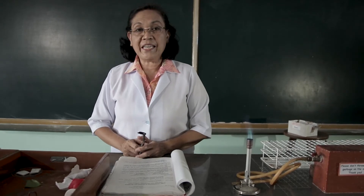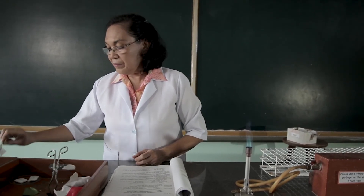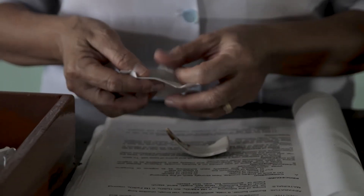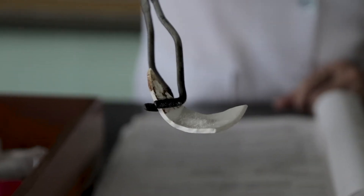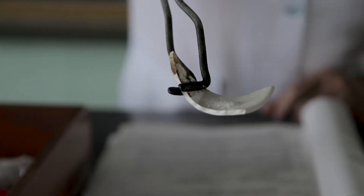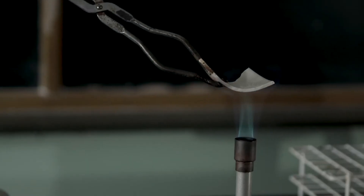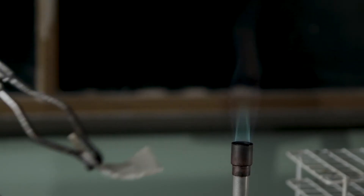Then we are going to heat a table salt. This is the table salt before it is heated. I want you to observe especially its color. Now, we are going to prove whether this table salt is combustible or not. Observe.